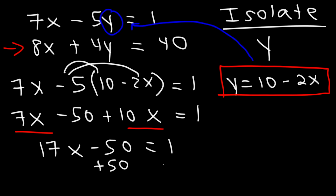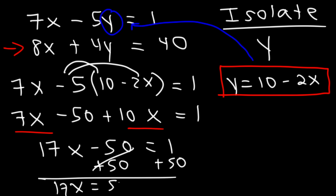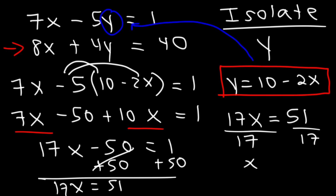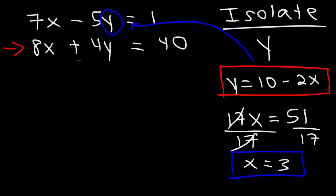Add 50 to both sides: 1 plus 50 is 51. So we have 17x is equal to 51. Divide both sides by 17: 51 divided by 17 is 3. So x is equal to 3. We can plug this back into either equation to find y, but we can also plug it into the isolated expression y equals 10 minus 2x, which is easier.